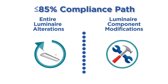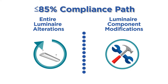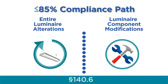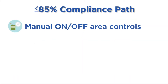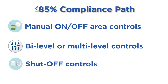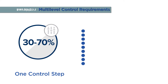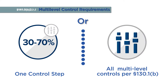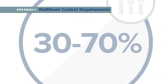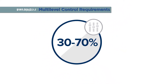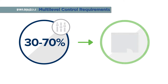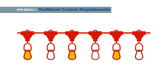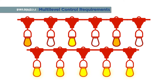The next compliance pathway is available for projects that deliver a total lighting power that is 85% or less of that allowed under the 2016 standards per section 140.6. This compliance option is available for both entire luminaire alterations and luminaire component modifications. Qualifying projects must include manual on-off controls, bi-level or multi-level lighting controls, and shutoff controls. To satisfy multi-level lighting control requirements, the system must provide either one control step between 30% and 70% of full power or meet all multi-level lighting control requirements in section 130.1b. In the 2016 energy standards, this option now applies to the enclosed space and not to each luminaire, meaning that switching alternate luminaires or rows of luminaires can be used to meet multi-level lighting control requirements.